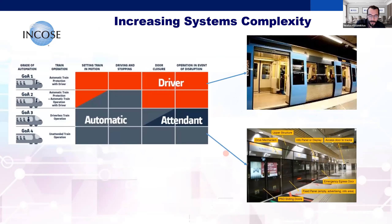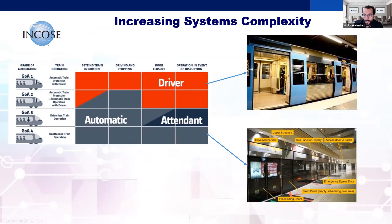As a concrete example in railway: we started with trains with a driver, and now we have driverless autonomous trains. The complexity of components and integration has increased — platform screen doors, dedicated communication systems, and indicators are all needed. Increasing features and interfaces all need to be managed.